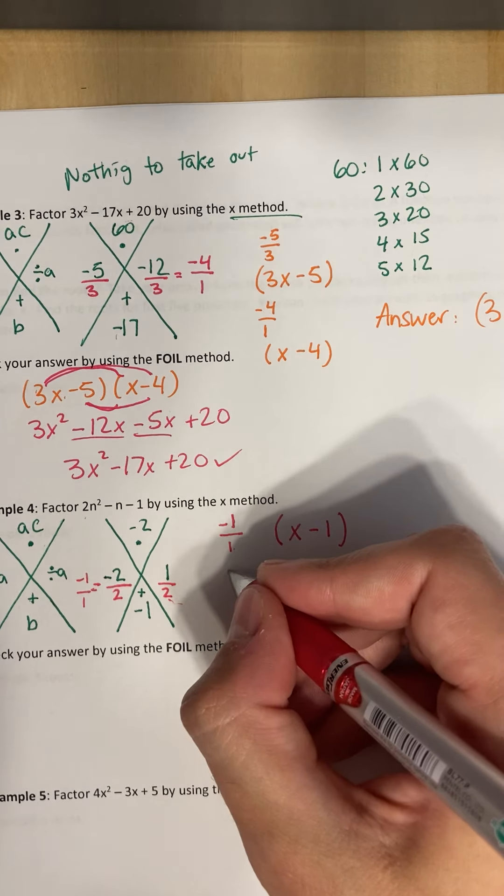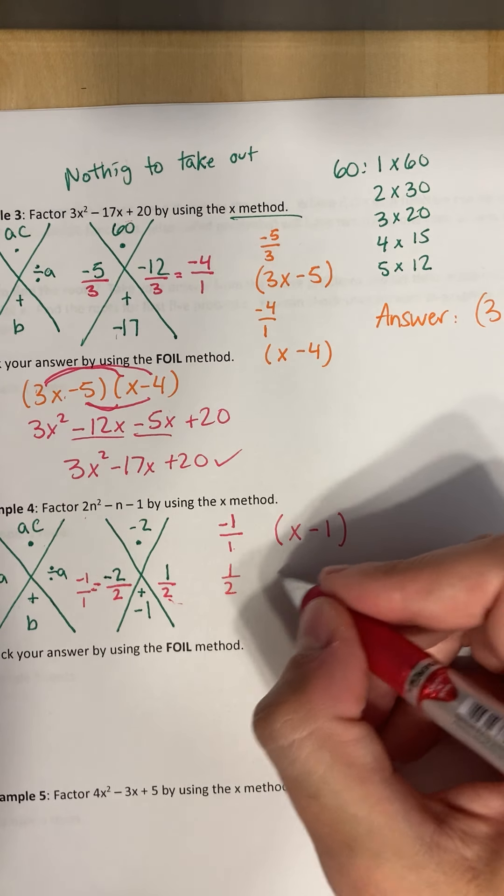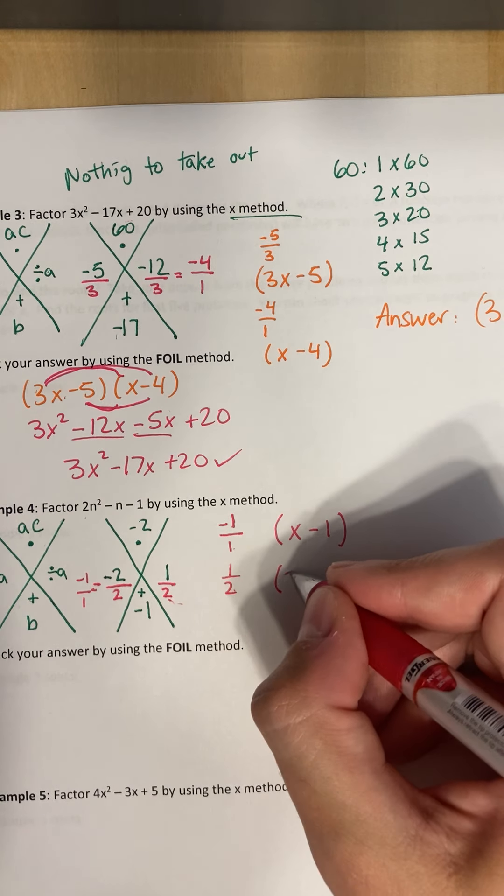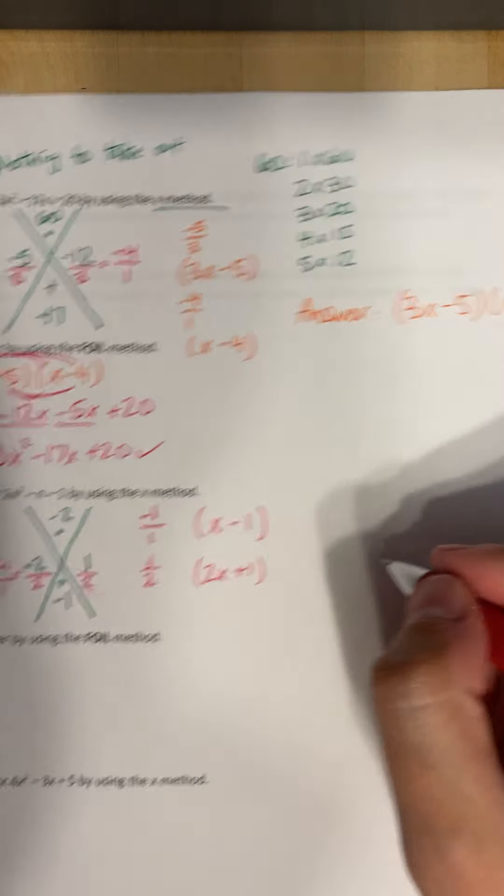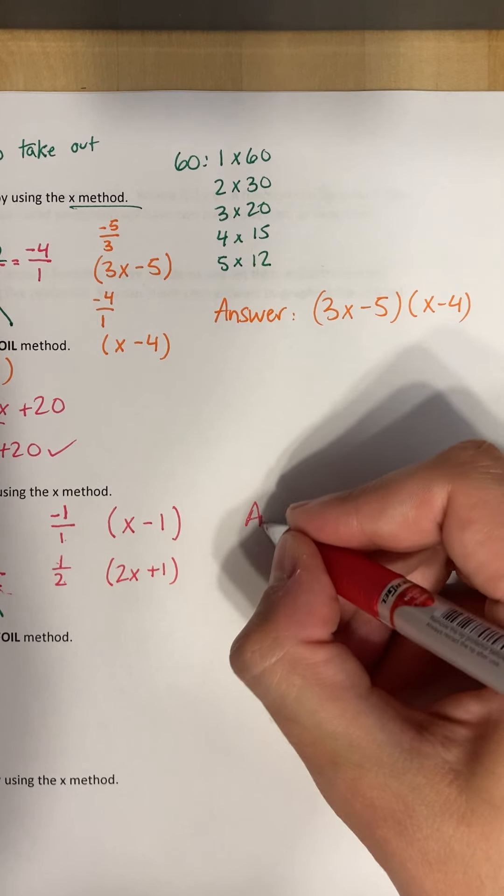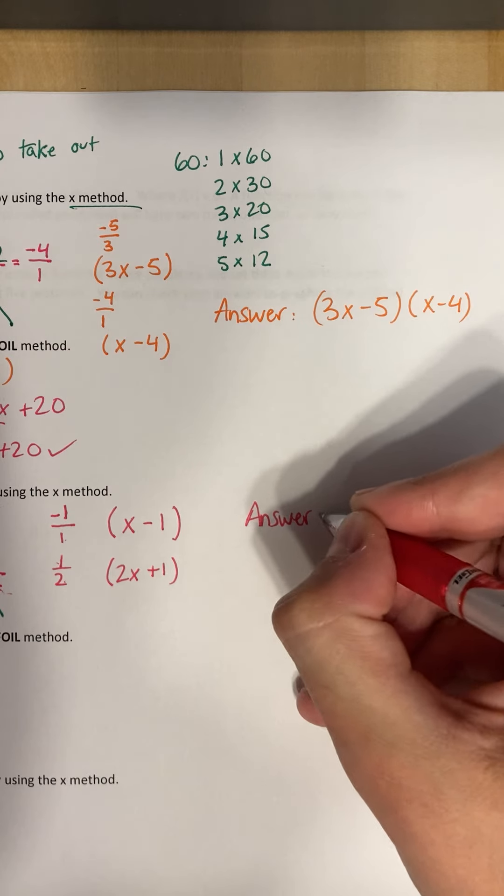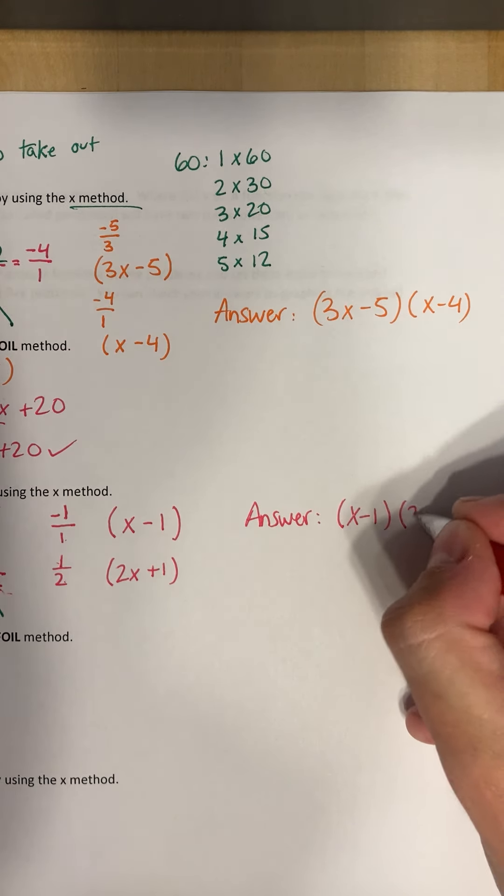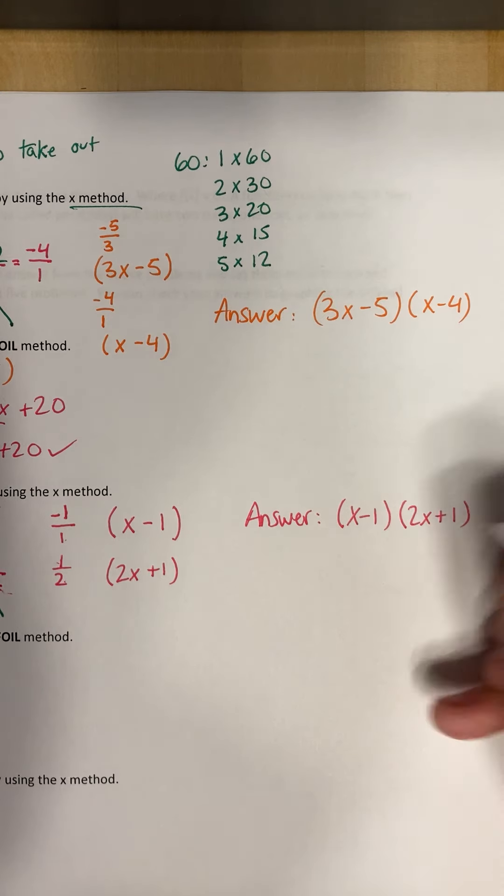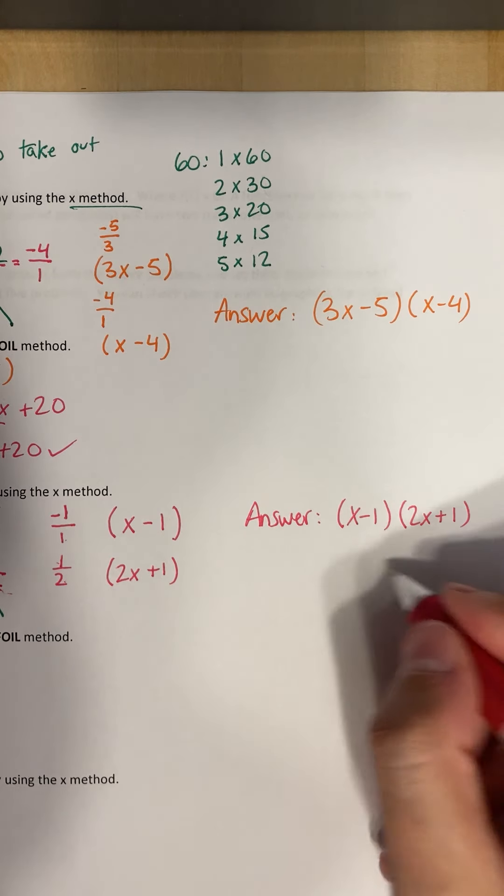And then one half, one half, what will one half give me? Well, that'll give me a two x, and then plus one. So our answer is x minus one, two x plus one. There we go.